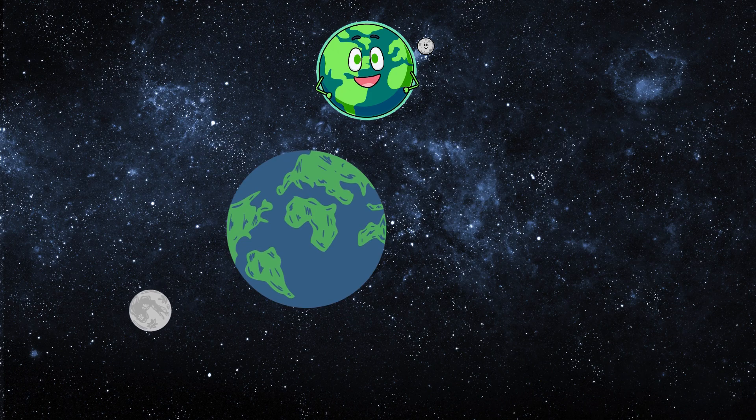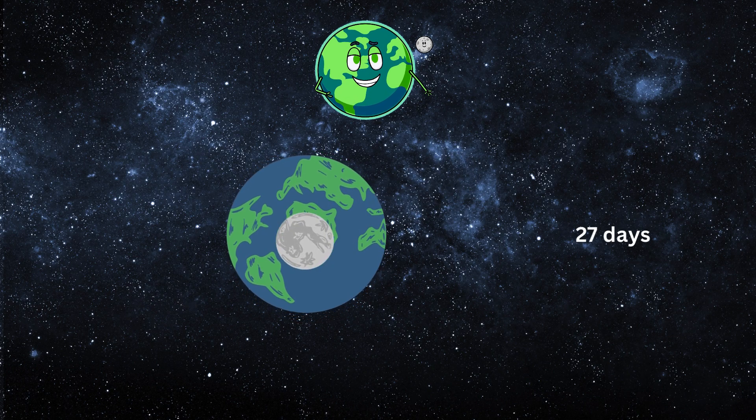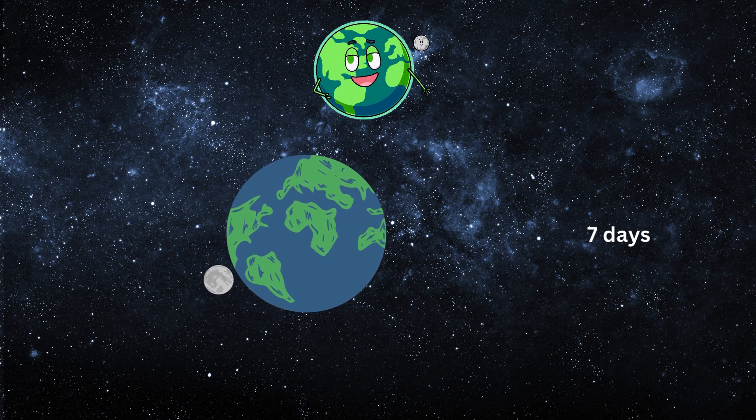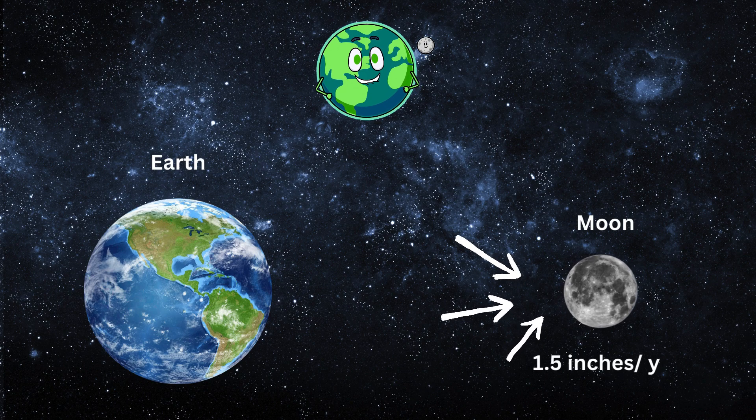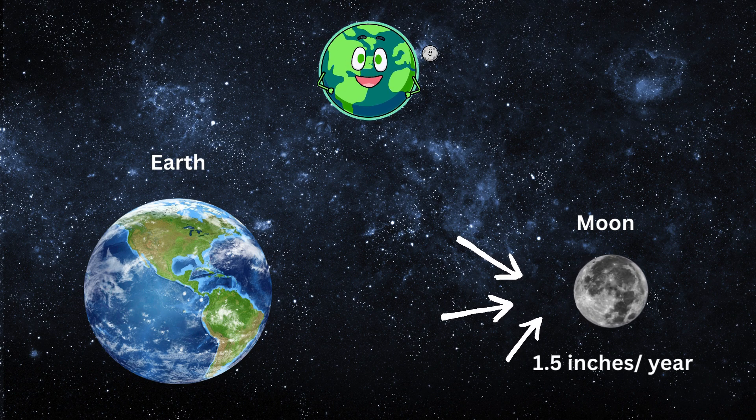The Moon orbits, or travels around, the Earth. It takes about 27 days to go all the way around. And guess what? The Moon is slowly moving away from Earth about 1.5 inches every year.